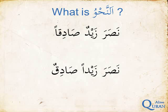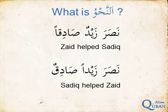The translation of the first sentence, Nasara Zaidun Sadiqan, is: Zaid helped Sadiq. The translation of the second sentence, Nasara Zaidan Sadiqun, is in fact: Sadiq helped Zaid.